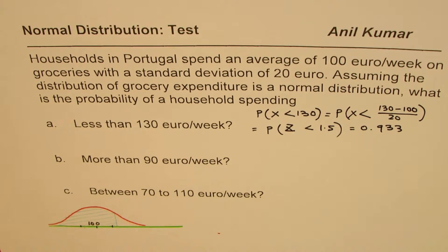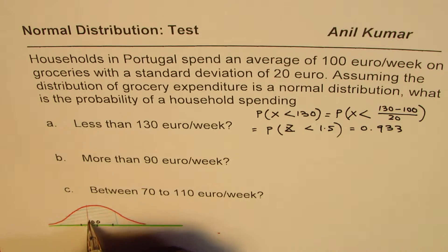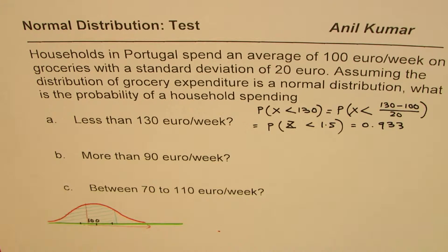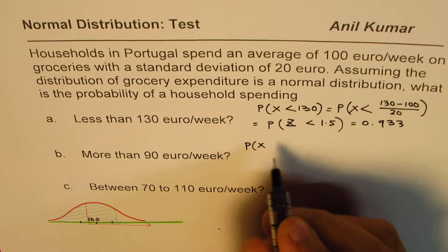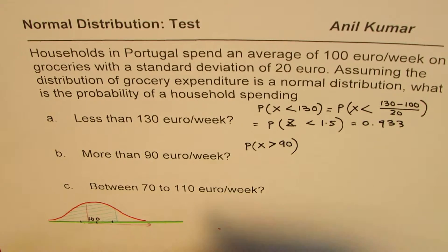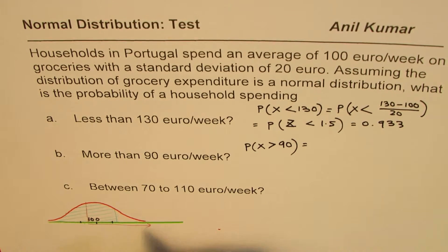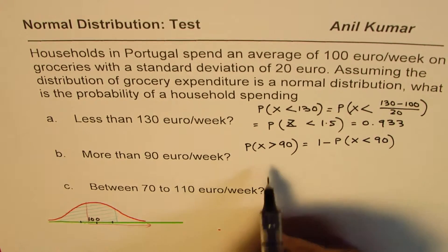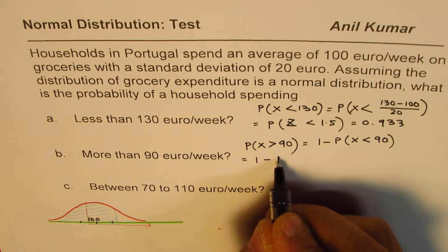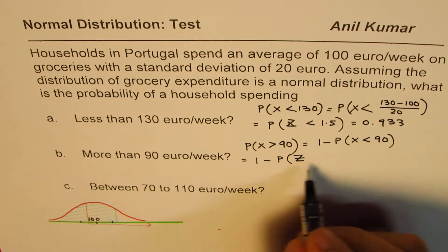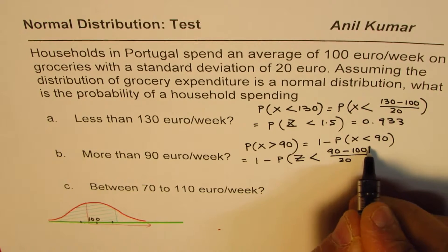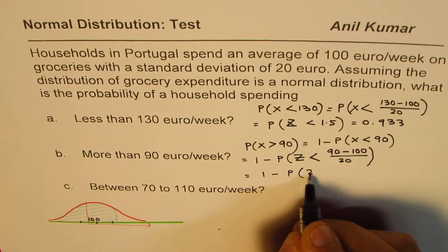Now let's look at the second part: more than 90 euro. More than 90 means we are looking at the right side of 90 on the curve. The table we have is for less than, so we use the complement: P(X > 90) = 1 − P(X < 90). We standardize: Z = (90 − 100) / 20 = −10 / 20 = −0.5. So this becomes 1 − P(Z < −0.5).